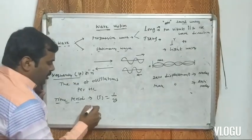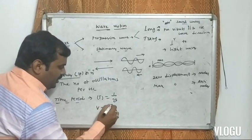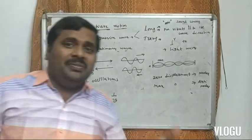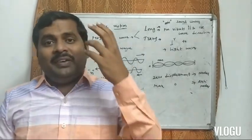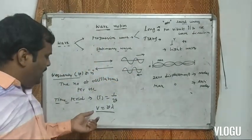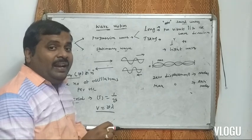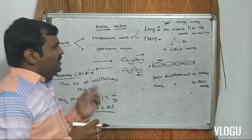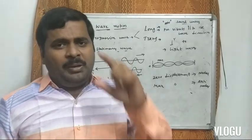The next formula is velocity. The relation between velocity V, frequency ν, and wavelength λ is: V = νλ. These are the main basic fundamentals in wave motion.